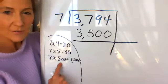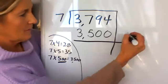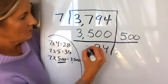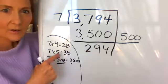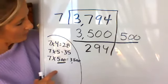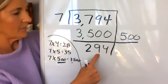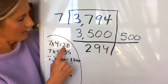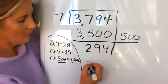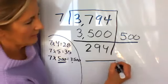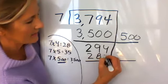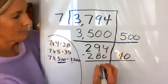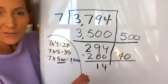I made 500 groups of seven. How much do I have left? 294. Is anything here going to help me maybe with that? And I'm seeing this 28, which I know I can make 10 times greater into 280. So I think I'm going to work with that. Seven times four is 28. So seven times 40 is going to be 280. And that's because I made 40 groups of seven. And I have 14 left over.